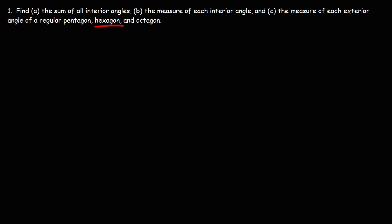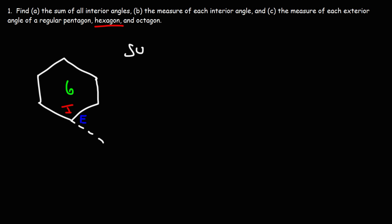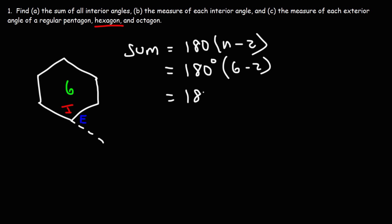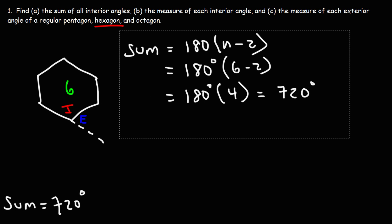Let's do the same thing for a hexagon. Drawing the hexagon with six sides and extending one of the sides, we calculate the sum: 180 times n minus 2, where n is 6. So this becomes 180 times 4, which gives us 720 degrees — the sum of all of the interior angles inside a regular hexagon.